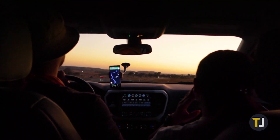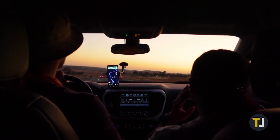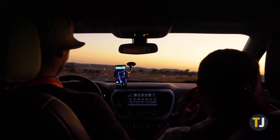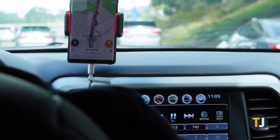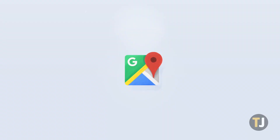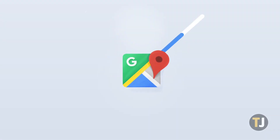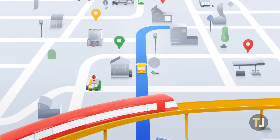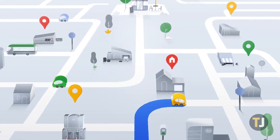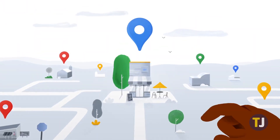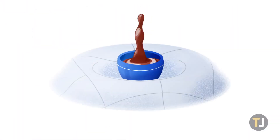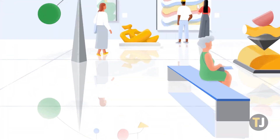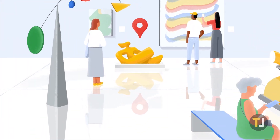Both Android and iOS offer a number of different apps for navigating from one location to the next. But regardless of what phone you use every day, Google Maps is easily the best navigation app on the market. From their extensive feature set like speedometer alerts and built-in media controls, to their up-to-date and accurate maps, Google Maps is how most people get from point A to point B.